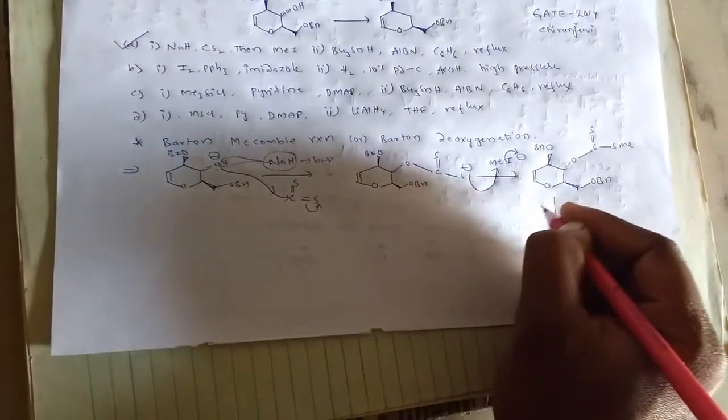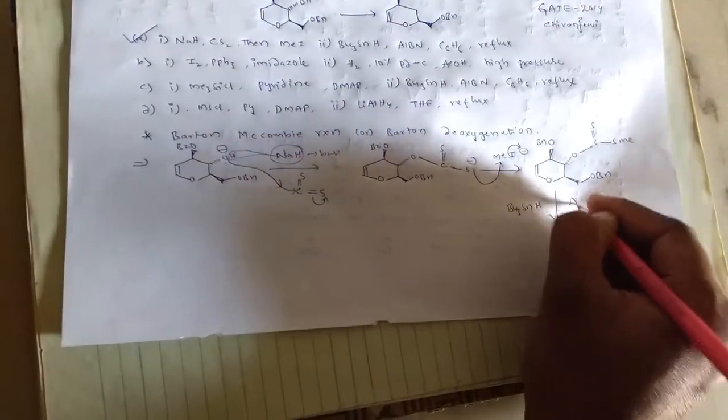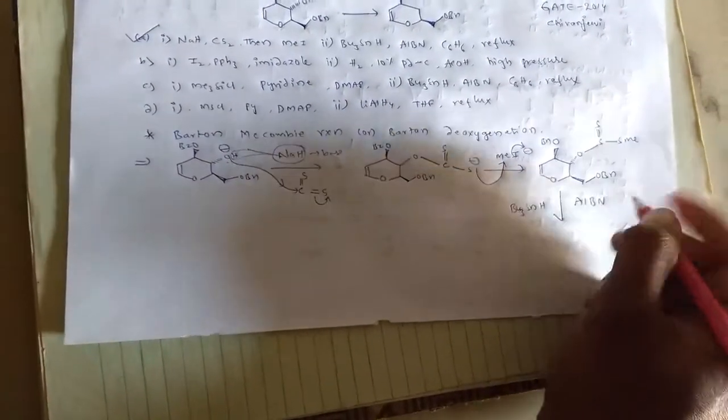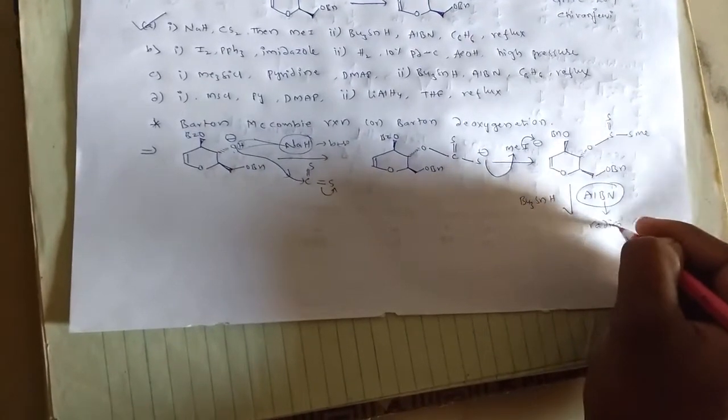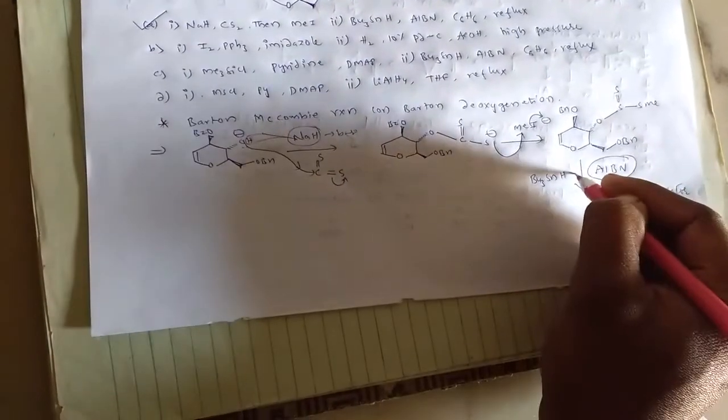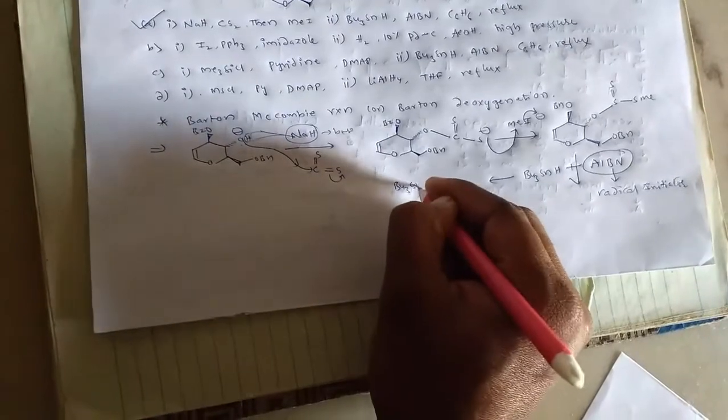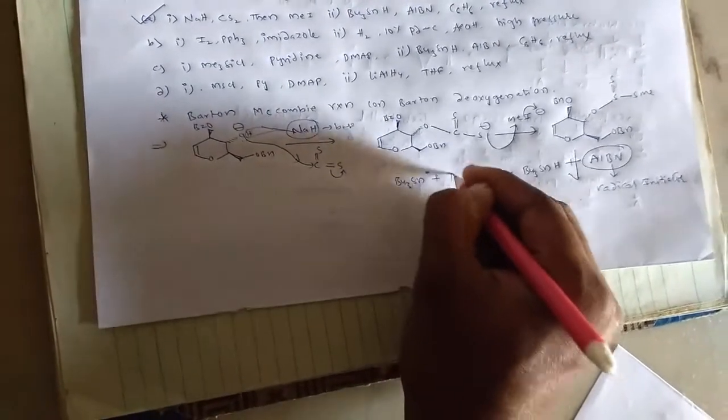On further reacting with the second reagent — tributyltin hydride in presence of AIBN — AIBN is a radical initiator. When this combination is present, we get tributyltin radical plus hydrogen radical.